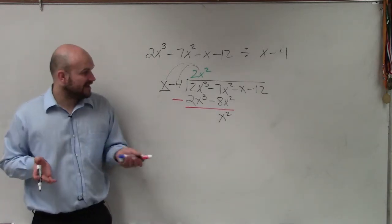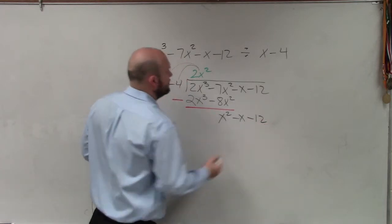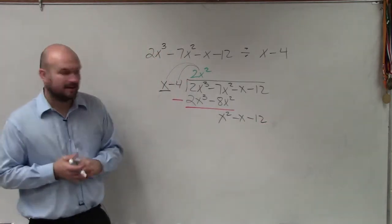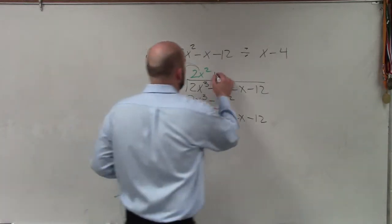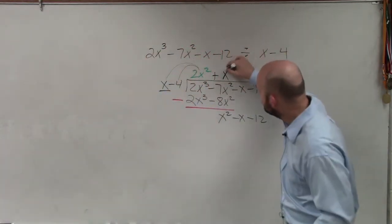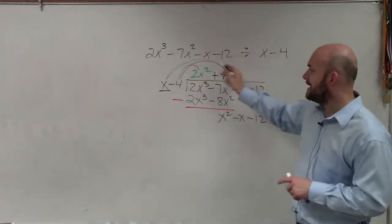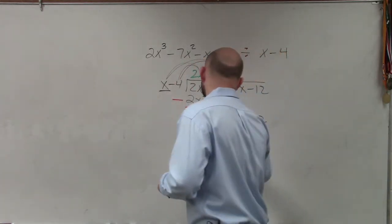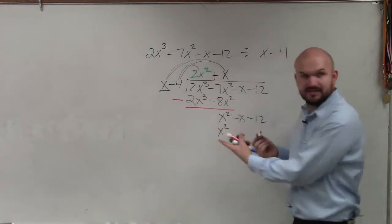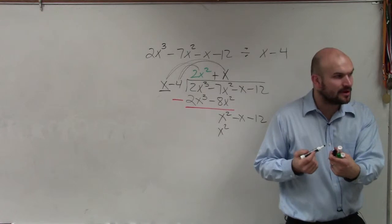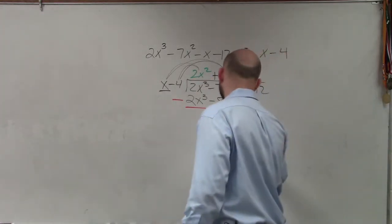Now, once I have this value, you can bring down everything else if you'd like to. But now we start the process again. x divides into x squared positive x times. Then we multiply x times x and x times negative 4. x times x is x squared. Do you guys see how, again, I'm getting the same terms? Right? If you don't get the same terms, you did something wrong. So then x times negative 4 is a negative 4x.